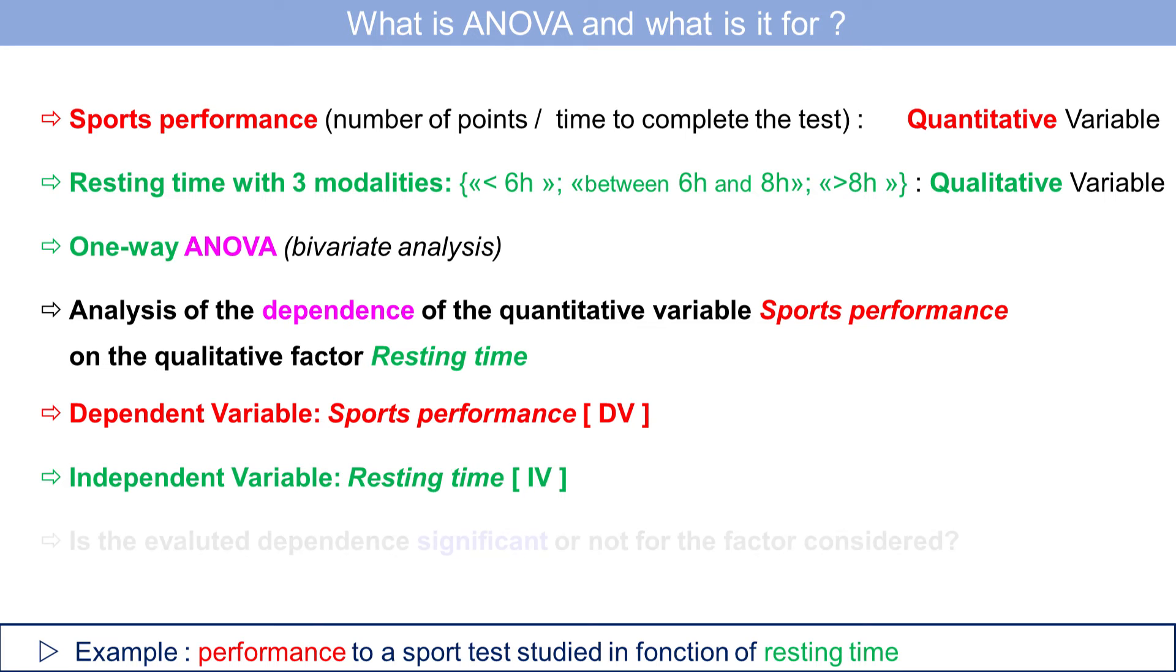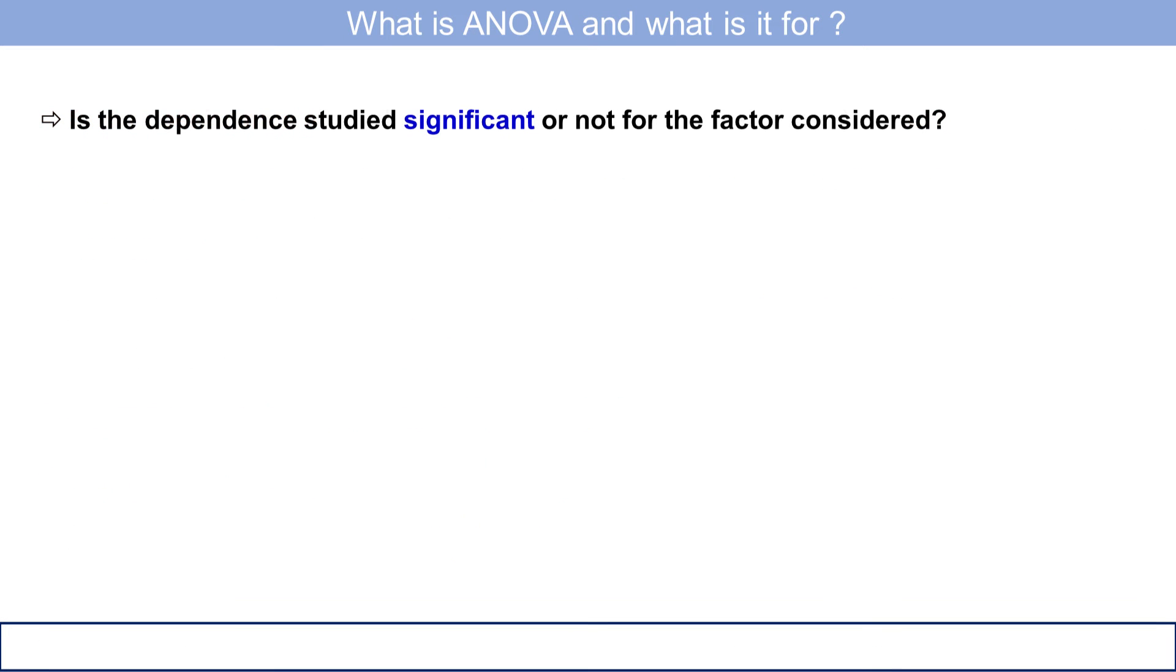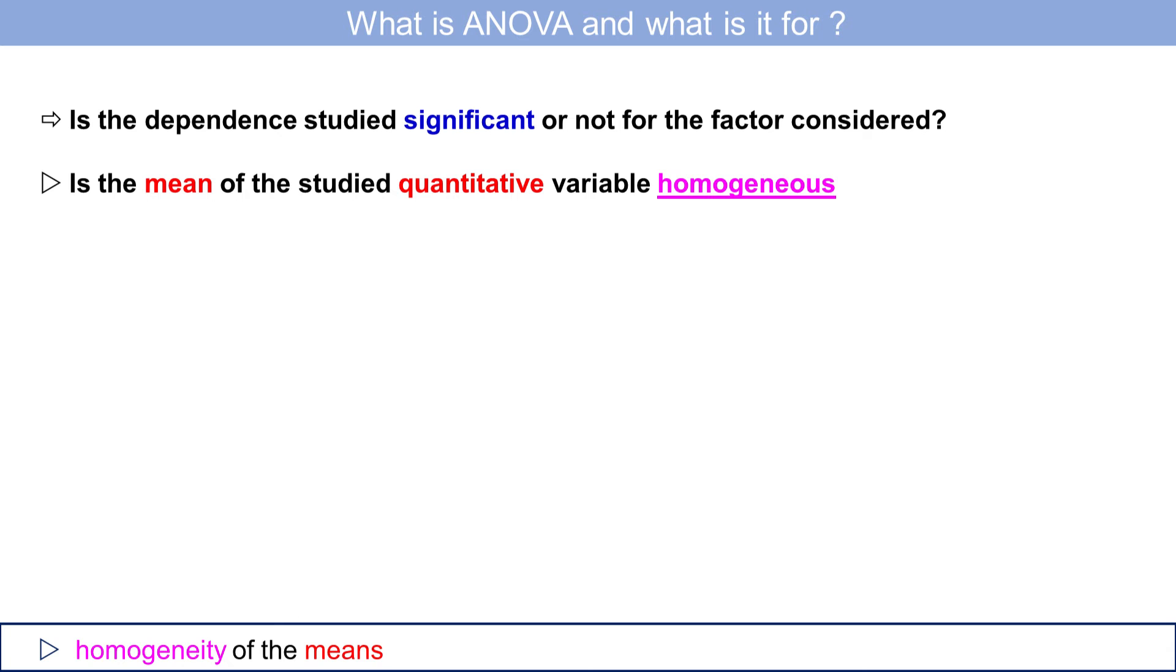We want to know if the studied dependence is significant for the considered factor or not. Without explaining in detail the underlying theory of ANOVA, we need to do a statistical test to evaluate whether the mean of the quantitative variable studied is homogeneous or not depending on the modalities A, B, or C of the qualitative variable for which this mean has been calculated.